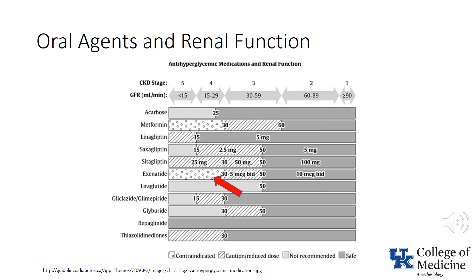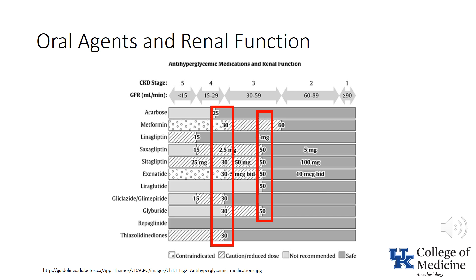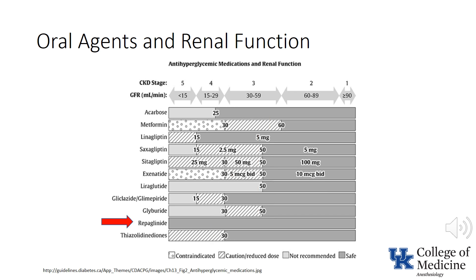For some drugs, there is a range of GFR over which they can be used with caution, but generally at a reduced dose. Some drugs are considered absolutely contraindicated below a certain GFR. For most drugs, the point at which recommendations change is a GFR of approximately 50 milliliters per minute, with further restrictions occurring at approximately 30 milliliters per minute. Dosing recommendations for only one drug do not change as renal function deteriorates.